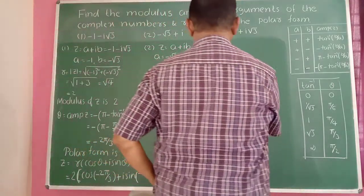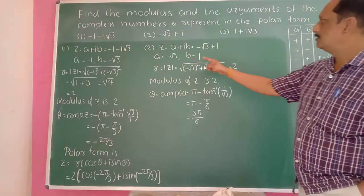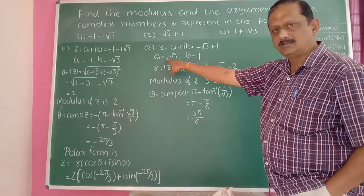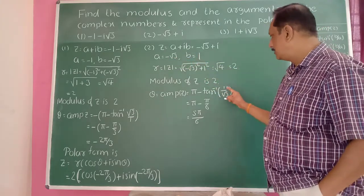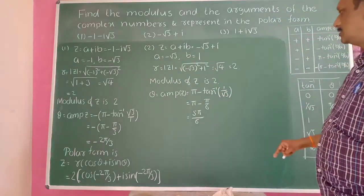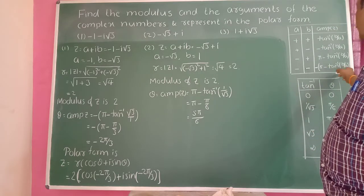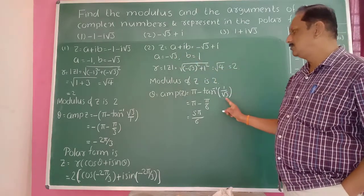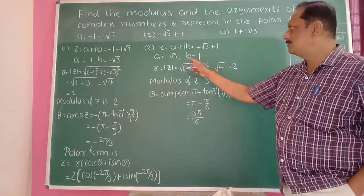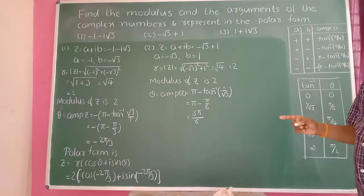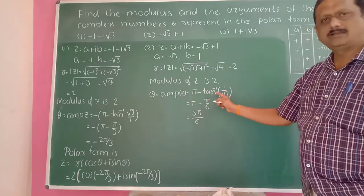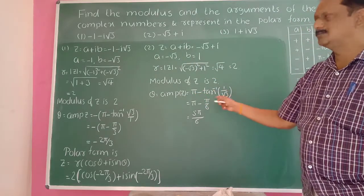One important point: in the formula tan inverse of b/a, you take only the magnitude of the numbers. Here b/a would be 1 divided by minus √3, but you take only 1/√3, not the negative value. Because pi minus tan inverse of 1/√3 already places the angle in the second quadrant, since a is negative and b is positive.